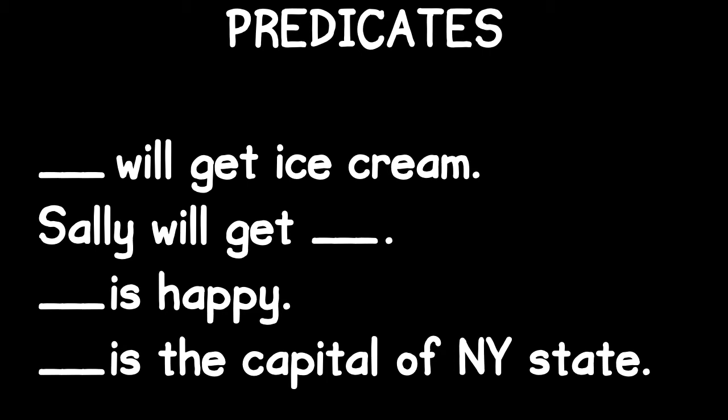Predicates are things that you can say about objects. You can make a predicate by starting with a complete sentence and removing a noun phrase from it, replacing it with a kind of blank. For example: blank will get ice cream, Sally will get blank, blank is happy, blank is the capital of New York State. These are all predicates.